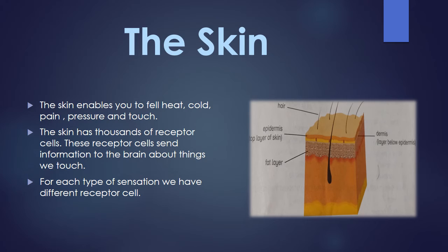The skin has thousands of receptor cells. These receptor cells send information to the brain about the things we touch. For each type of sensation we have different receptor cells — for heat, cold, pain, pressure, and touch, we have different receptors. They send signals to the brain and the brain decides whether what we are touching is hot, cold, or painful, and what the texture is. All of this is detected by the receptors.